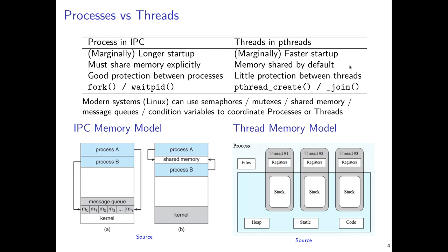Threads flip that around entirely — their primary model is that they all exist within a single process. The heap, static global variables, and all the code within the process are all available to any of the threads at any given moment. While threads have their own stack, you can get pointers between these stacks as well. The ability of threads to share multiple things within the same process is far greater than it was for processes.